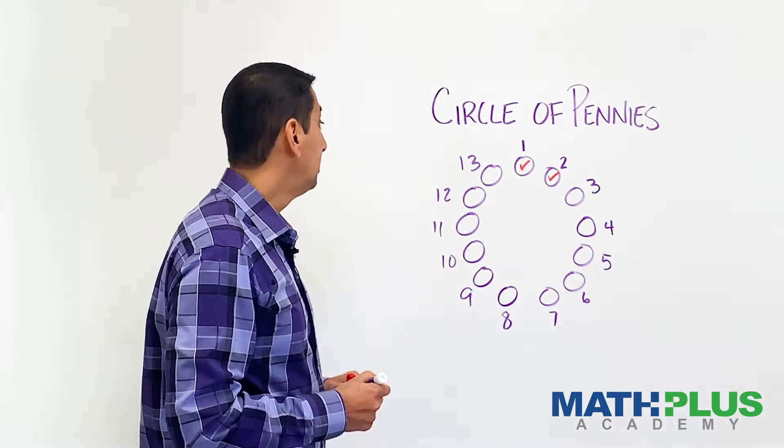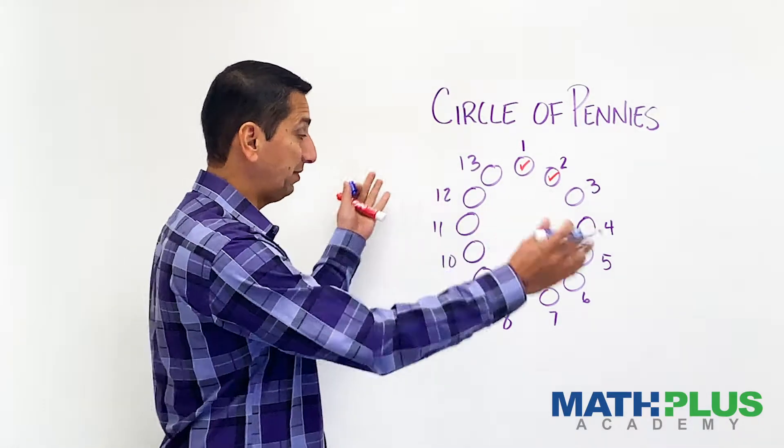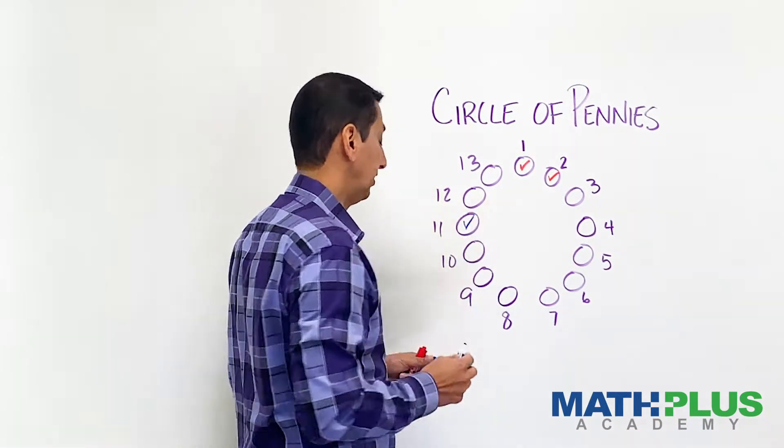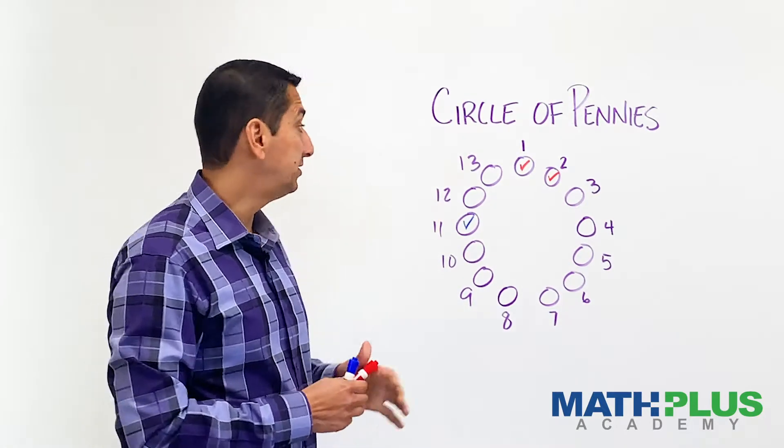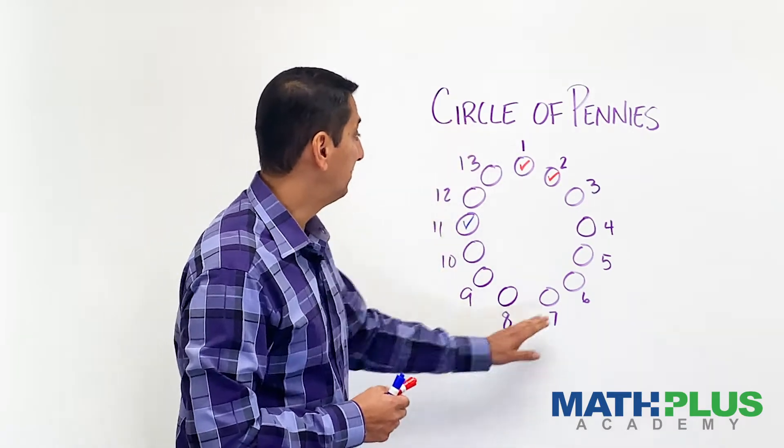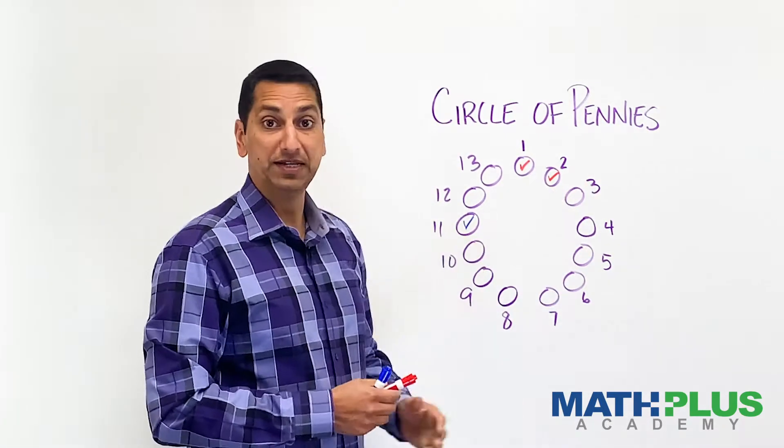Now, player two has a turn. Player two decides they can take a penny from anywhere they like. Maybe they take this penny right here. Now, because these pennies are gone and this penny is gone, these two are kind of on their own, and then we have this segment of pennies over here.